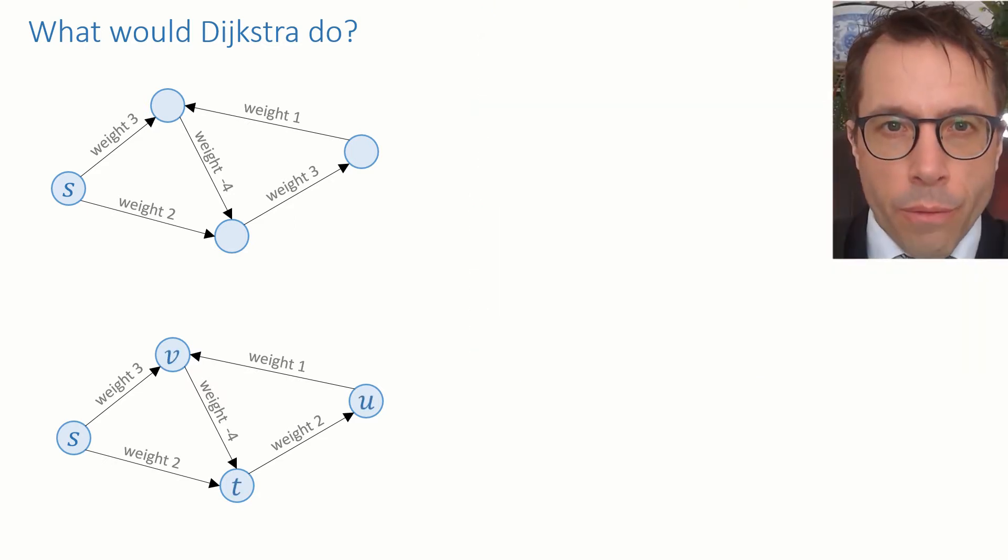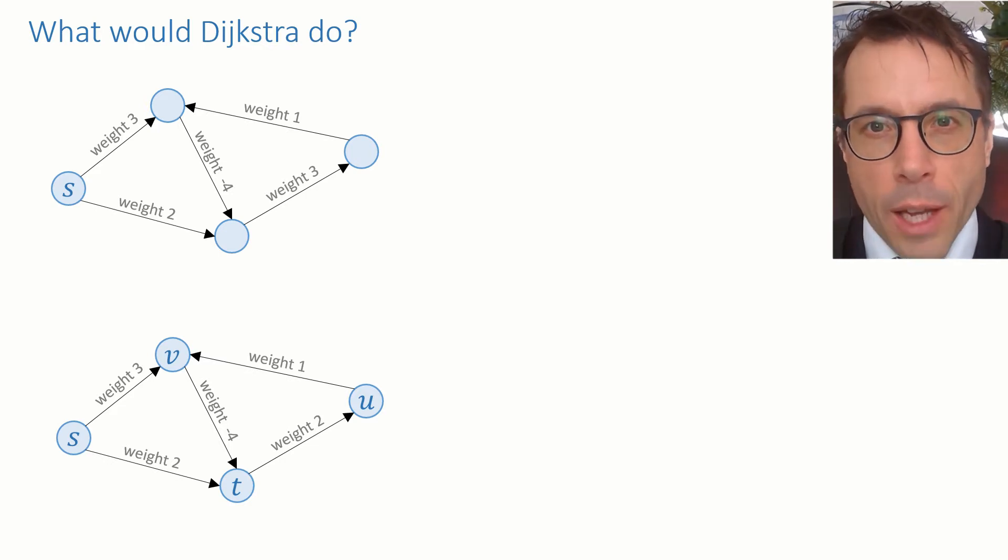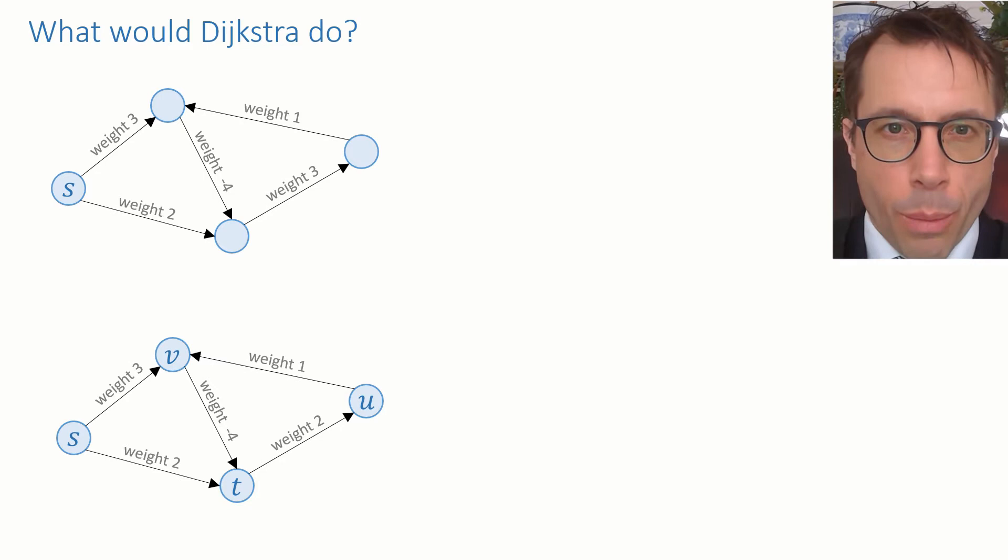What you should have found in the top graph is that Dijkstra's algorithm found the minimum weights correctly, though it did end up pushing a vertex back into the priority queue after it had been popped, which it never did on graphs with positive costs. And on the bottom graph, it hits an infinite loop.